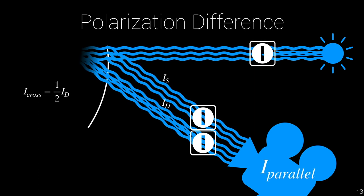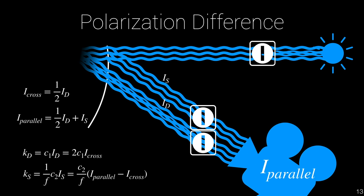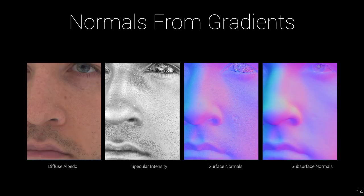If we then turn the polarizer 90 degrees, all the specularly reflected light will be able to pass through as well, while the diffusely reflected light stays the same — this is called parallel polarized light. By taking these two images, one from cross-polarized and one from parallel polarized light, we can separate diffuse from specular reflection by subtracting the parallel from the cross. This enables us to extract diffuse albedo and specular intensity. From gradients — by illuminating the subject from multiple directions — we can also extract both surface normals and subsurface normals.